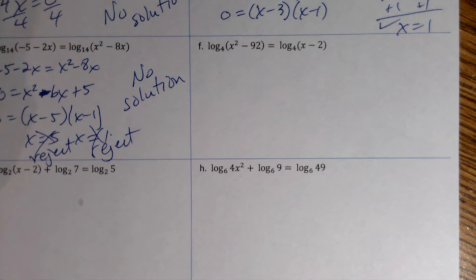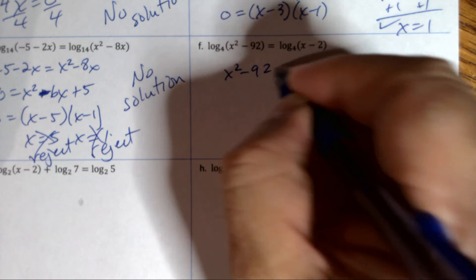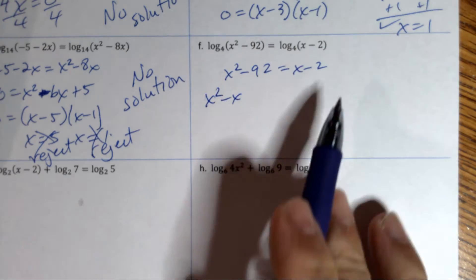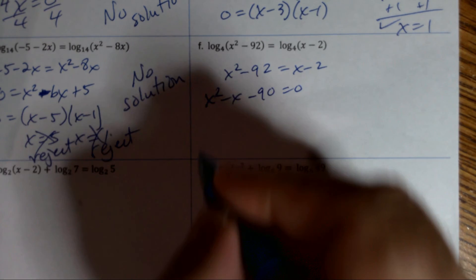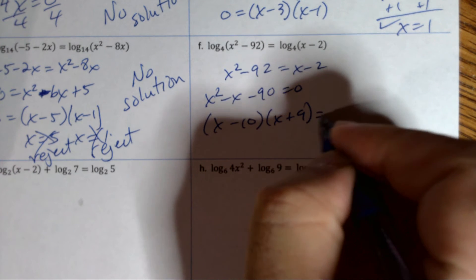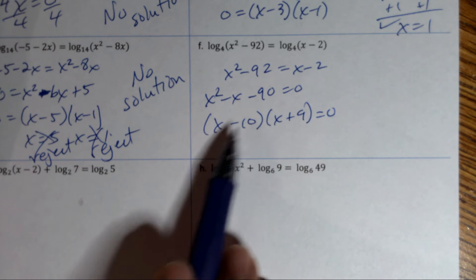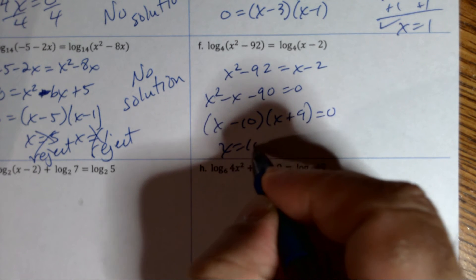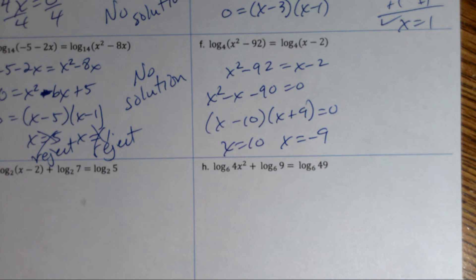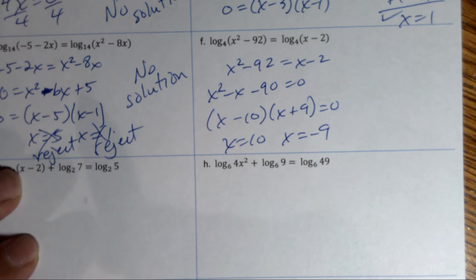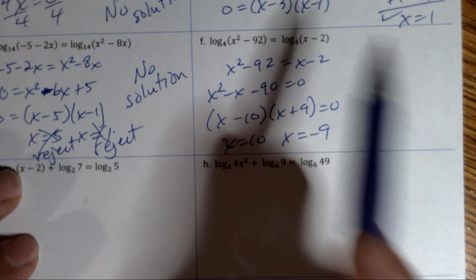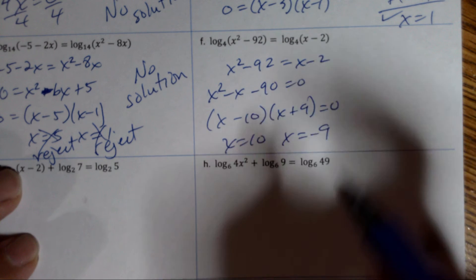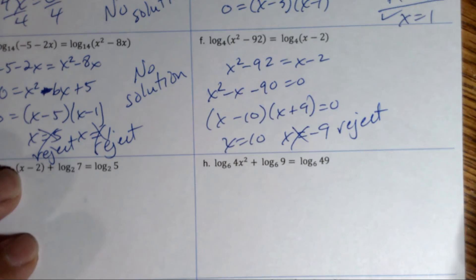For example F, drop the logs to get x² − 92 = x − 2. Moving everything to the left: x² − x − 90 = 0. Factoring — what factors of −90 combine to make −1? That's (x − 10)(x + 9) = 0, giving x = 10 or x = −9. Plugging in 10: 100 − 92 = 8, and 10 − 2 = 8 — valid. Plugging in −9: 81 − 92 = −11 — reject. Answer: x = 10.